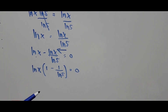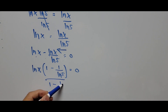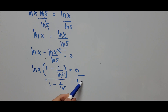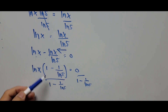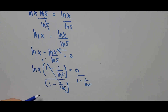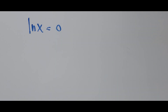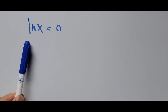We divide the whole equation by the factor in the parentheses — 1 minus 1 divided by ln of 5 — so that cancels, and what we have left on the left side of the equation is ln of X equals 0 divided by a number, which is 0.